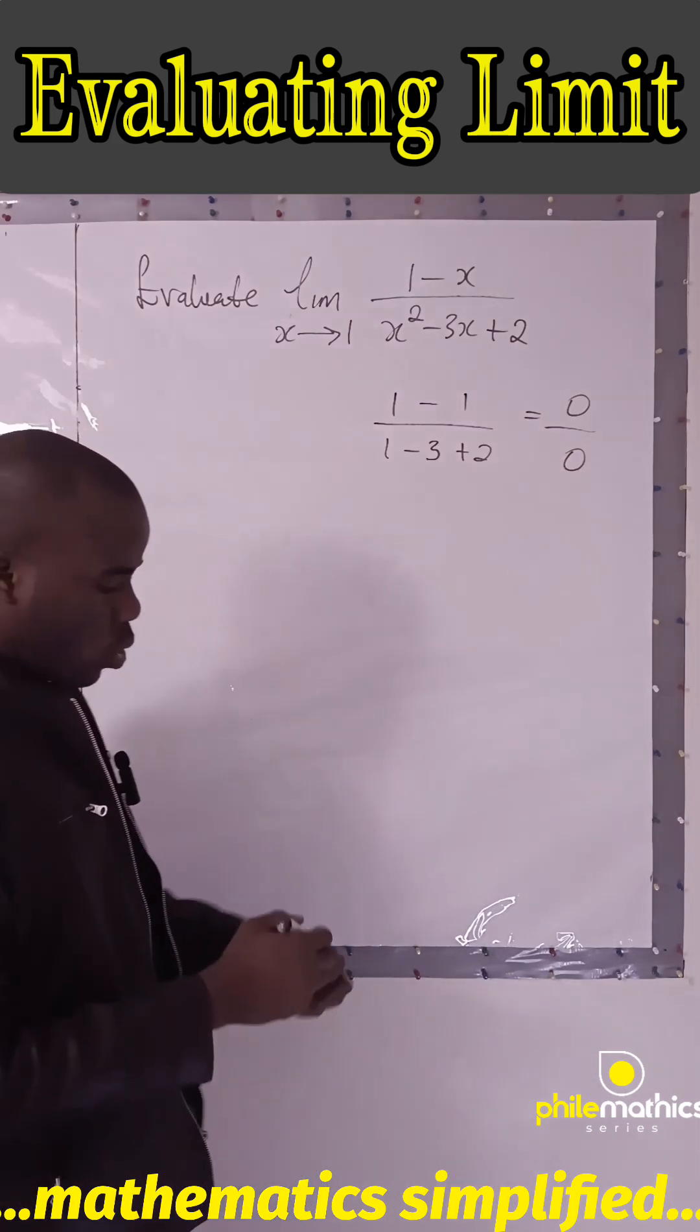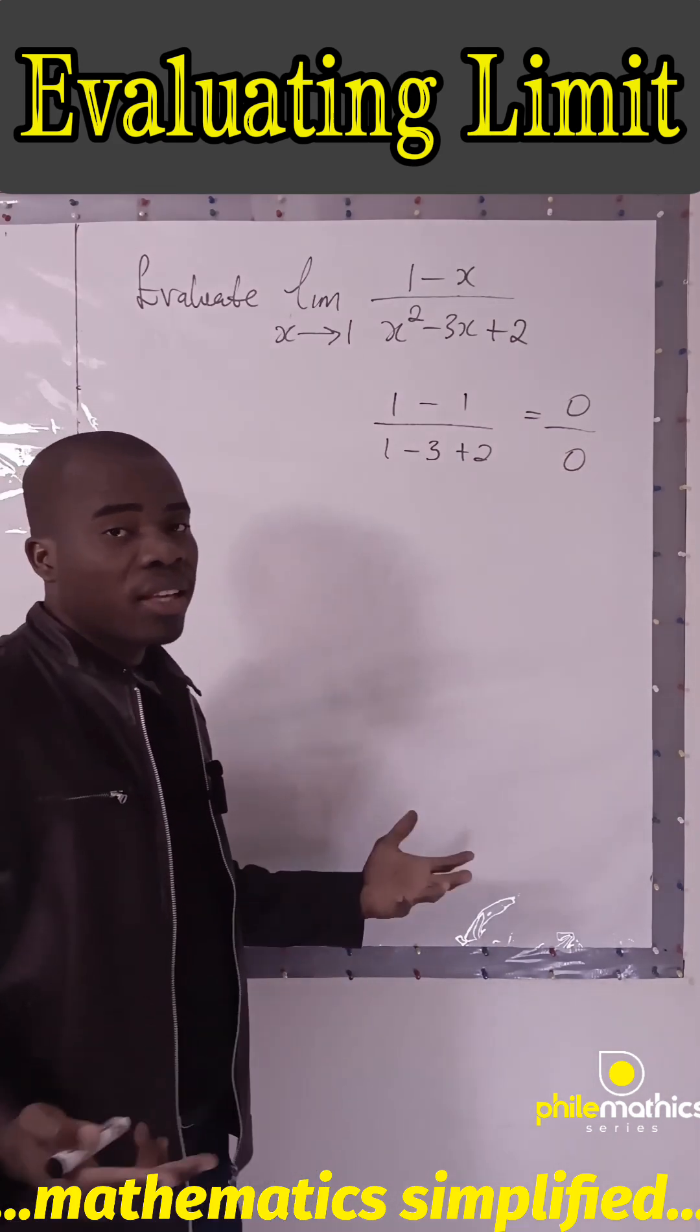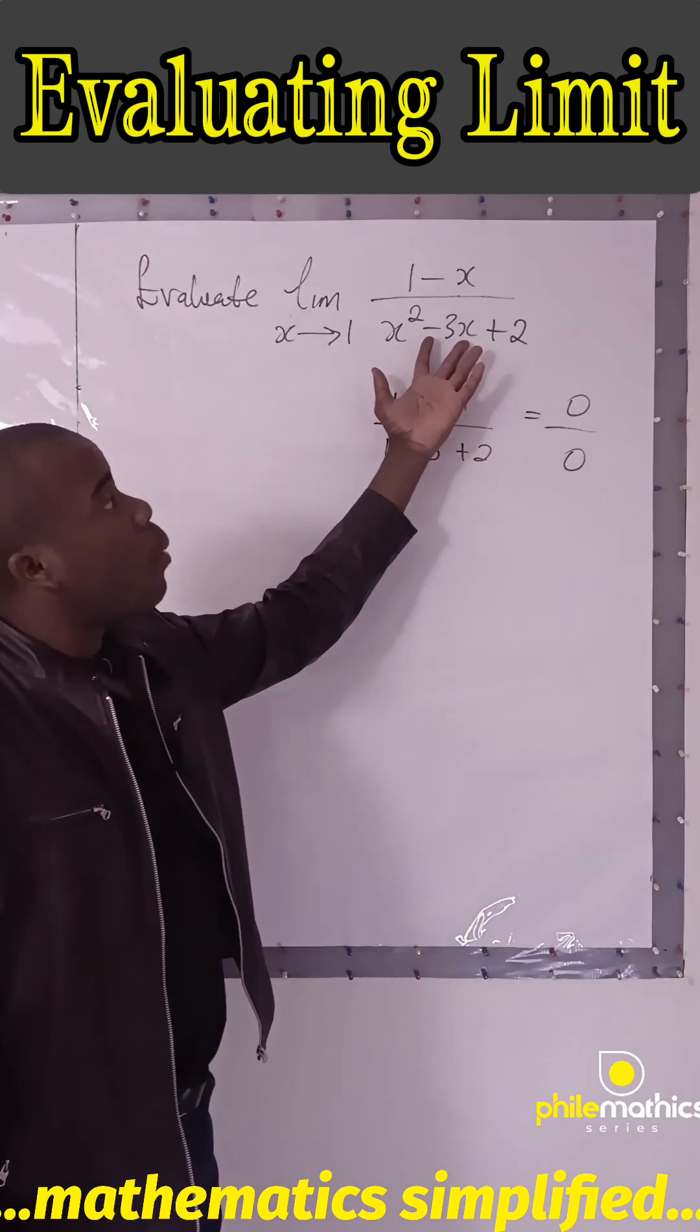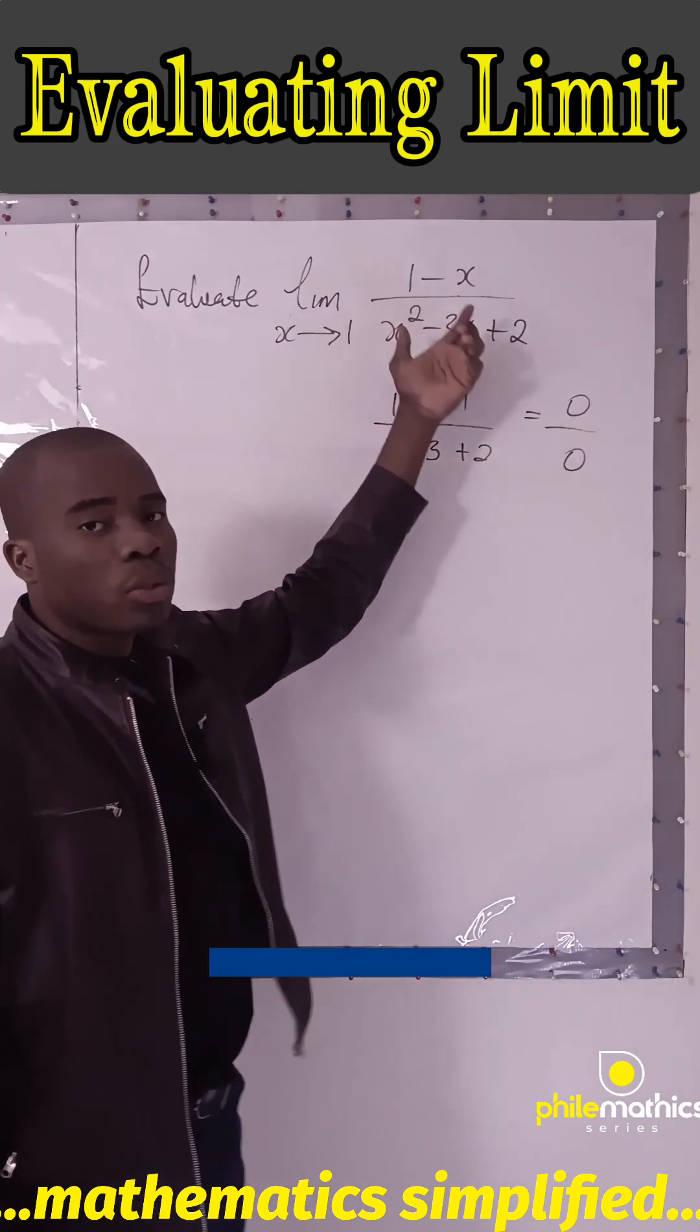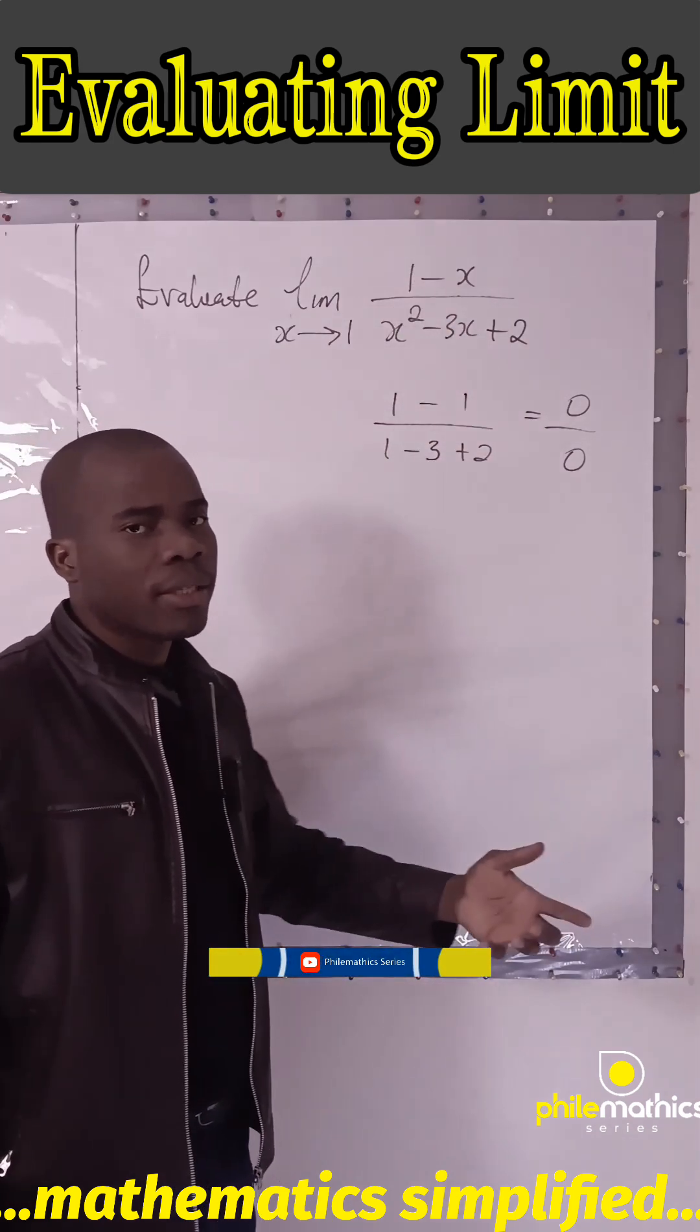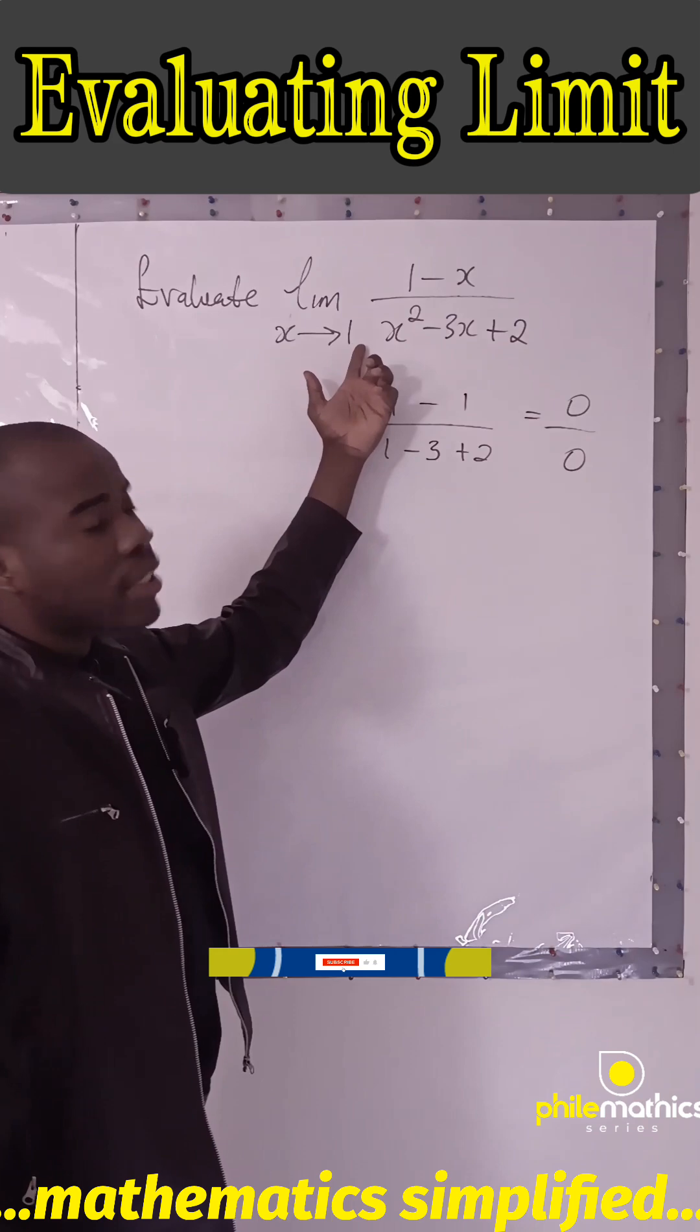Since we have zero over zero, we can do two things. We can choose to factorize the denominator and probably something could cancel out, or because this is what we call removable discontinuity at x equals one.